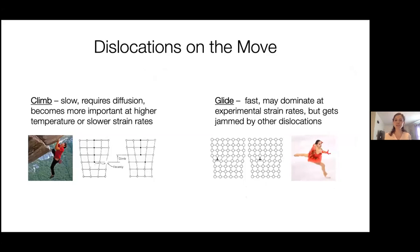I'll be talking a lot about dislocations. One reason is that they seem to be a more reliable piezometer. There's also abundant evidence that a lot of deformation in the deeper lithosphere and upper mantle is predominantly by dislocation creep. And they play a very active role in recrystallization — how grain size and other microstructural features change. When I talk about dislocations moving and evolving, I'll focus on two dominant ways in which dislocations move.